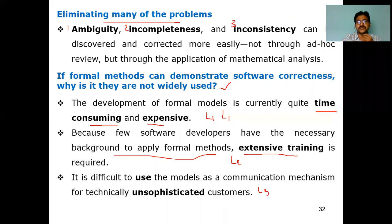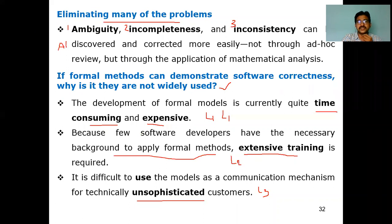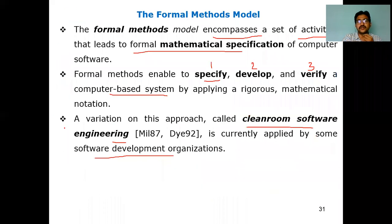The third limitation is that formal methods are difficult to use as a communication mechanism with technically unsophisticated customers — those who don't have knowledge in this area. Since communication is a key activity in the software engineering life cycle, using formal models makes that communication very difficult when dealing with non-technical customers. So formal methods have both advantages — overcoming ambiguity, incompleteness, and inconsistency — and drawbacks, which are these limitations.